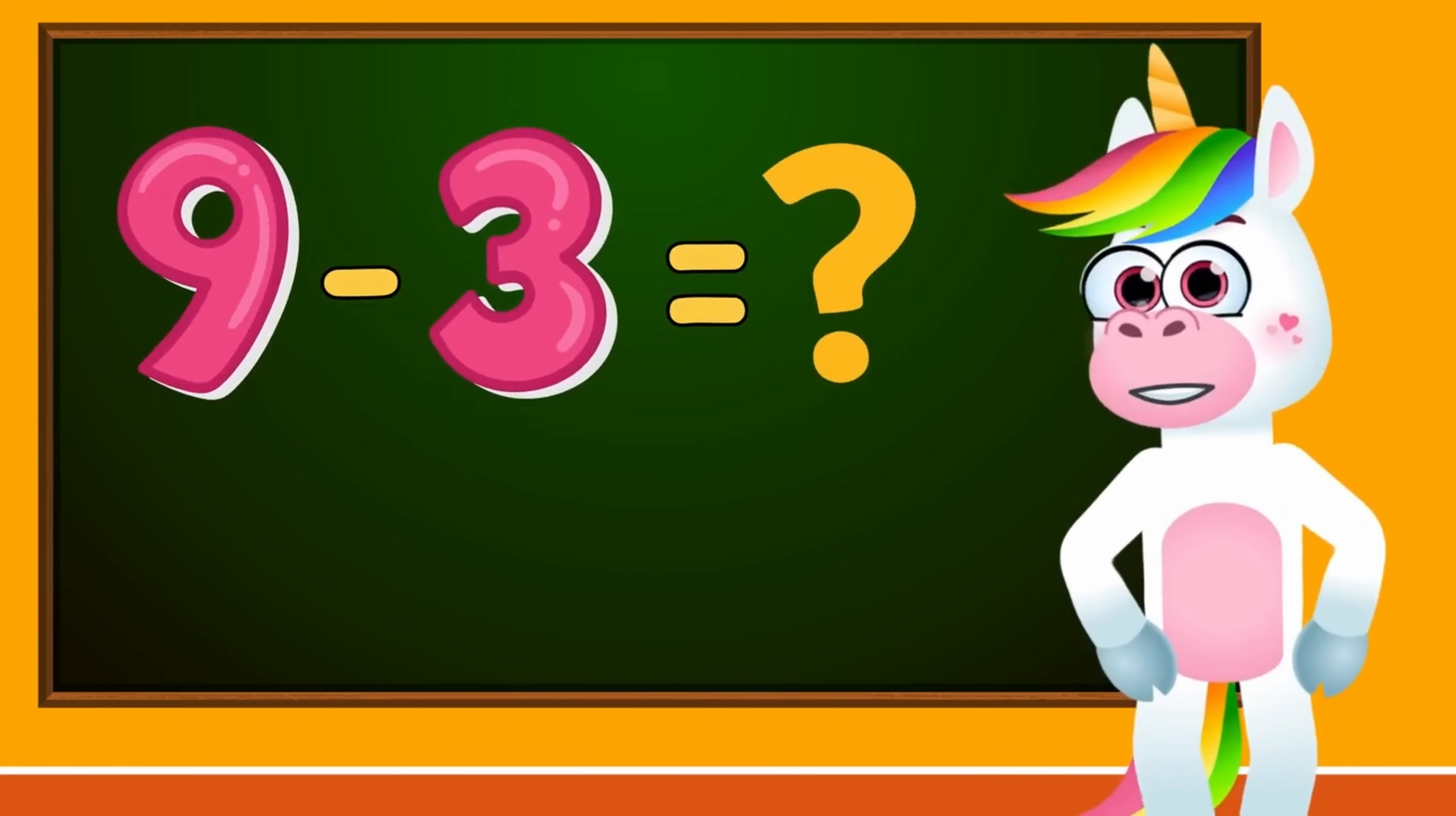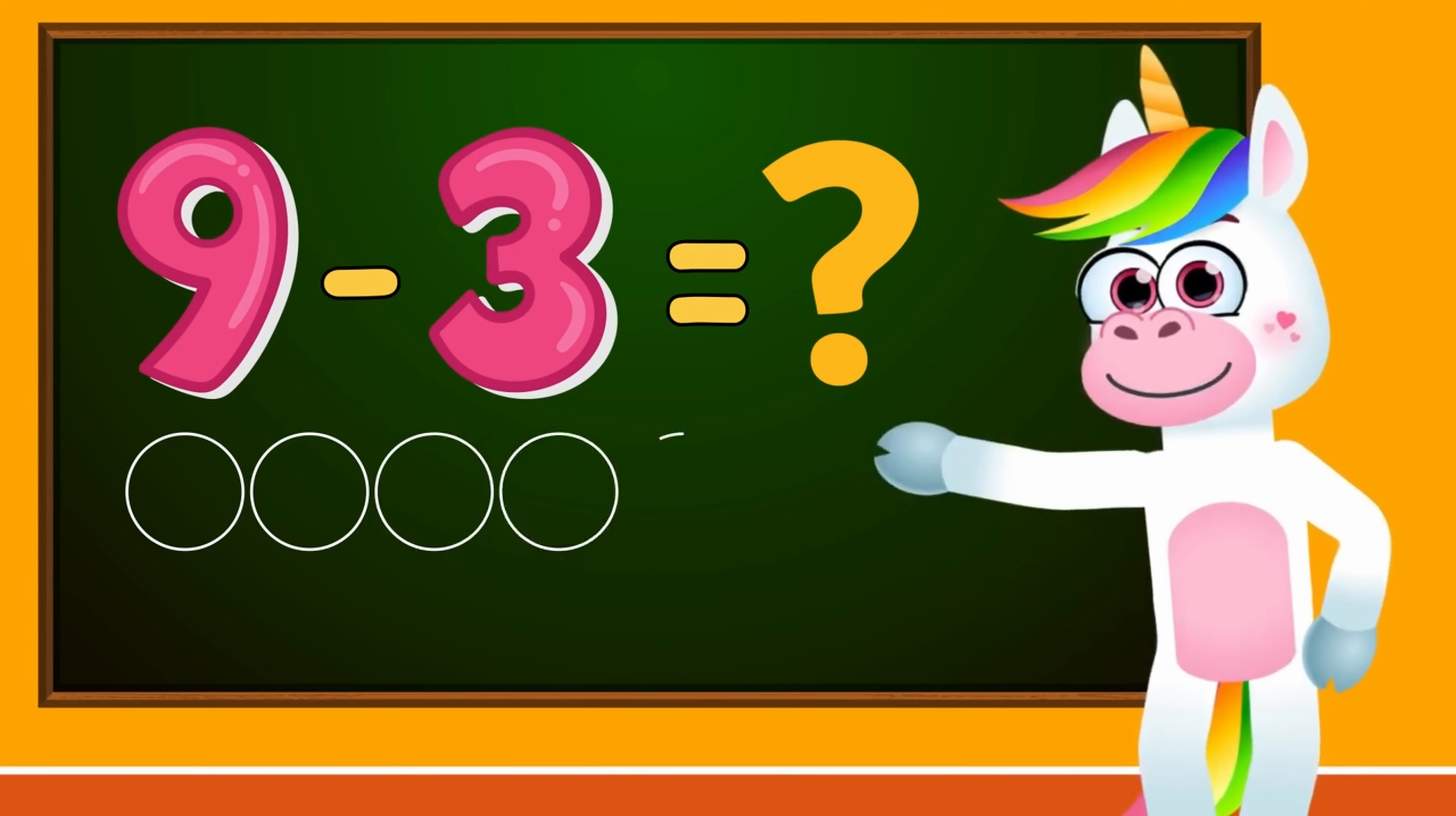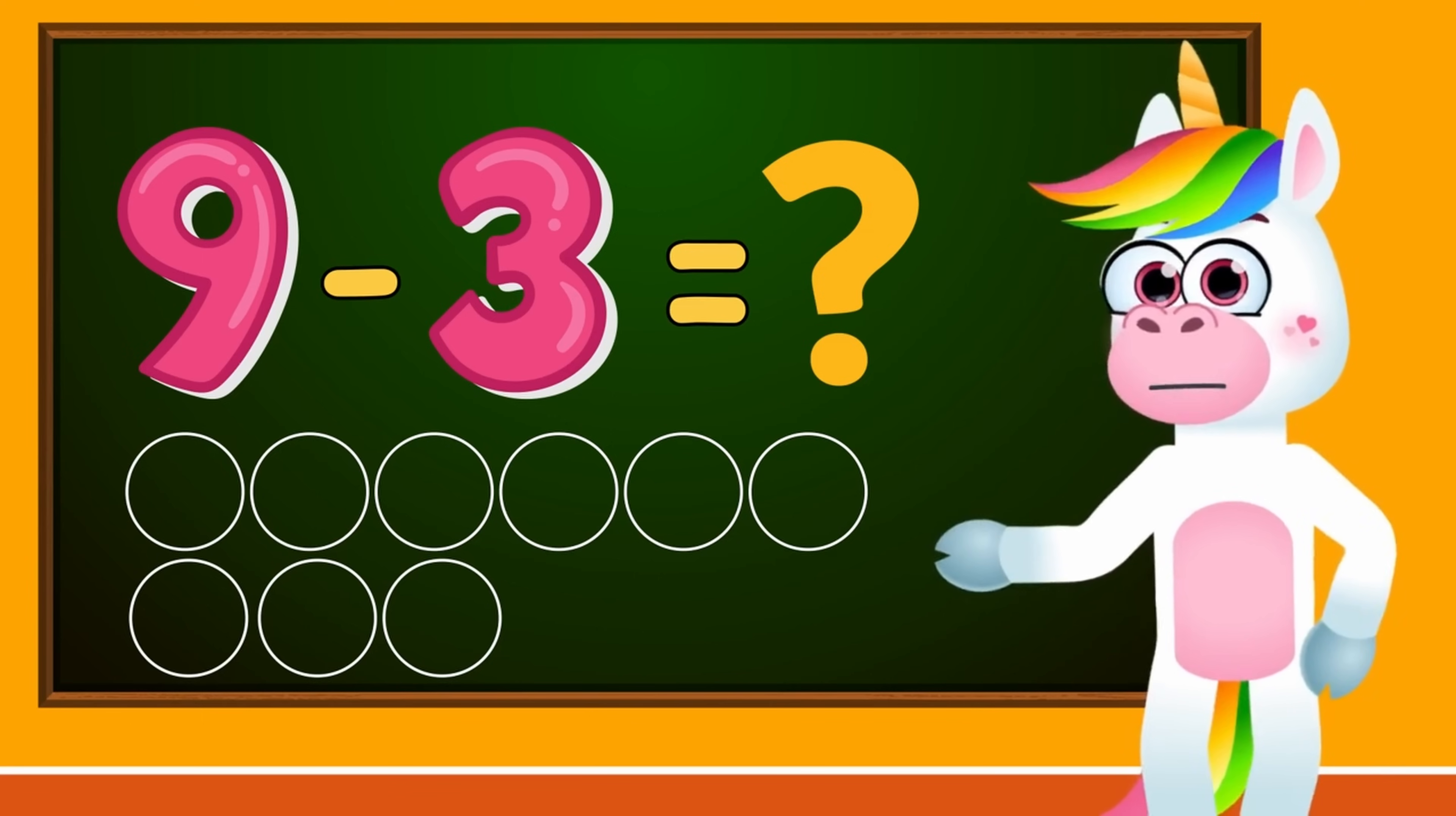Let's look at our next operation. What does 9 minus 3 equal? In the same way as before, we'll draw 9 circles. 1, 2, 3, 4, 5, 6, 7, 8, 9. And here, we need to subtract the number 3. So kids, we'll cross out 3 circles.